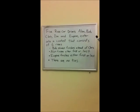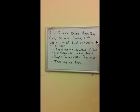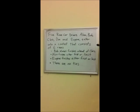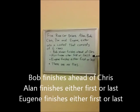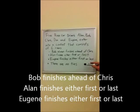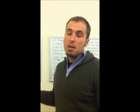We have five race car drivers: Alan, Bob, Chris, Don, and Eugene. They enter into a contest that consists of six races. And here are a few constraints based upon this: Bob always finishes ahead of Chris, Alan finishes either first or last, Eugene finishes either first or last, and there are no ties. So this is the basic outline of the LSAT logic game.